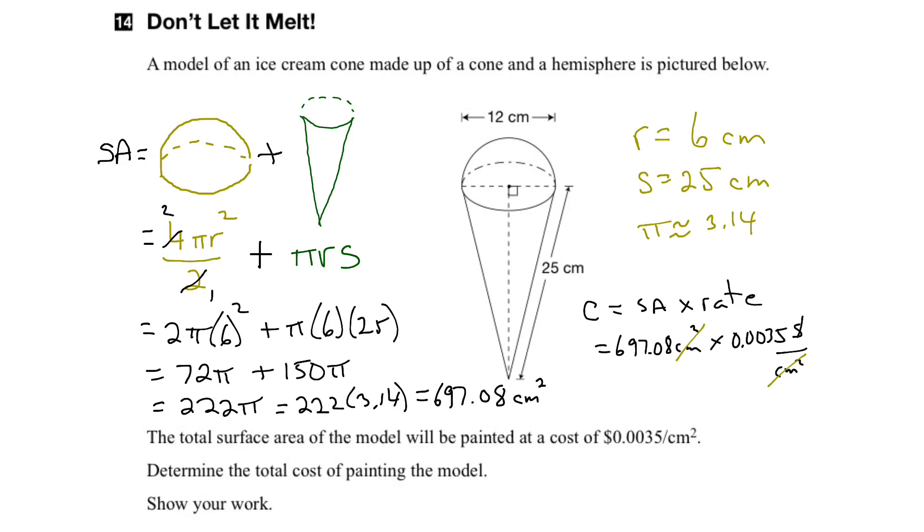So let's go ahead and finish up. So if we multiply those two together, we end up with $2.44. We just rounded up to the nearest penny. So the total cost for painting the cone would be $2.44. And there you go.